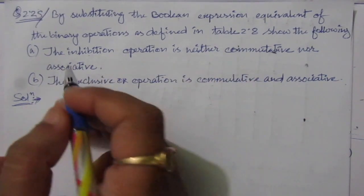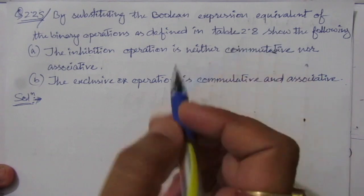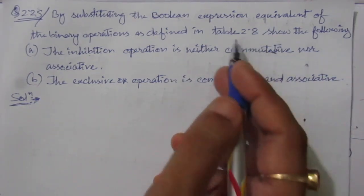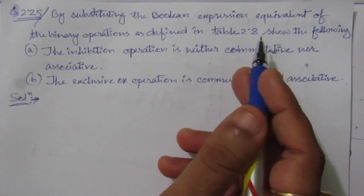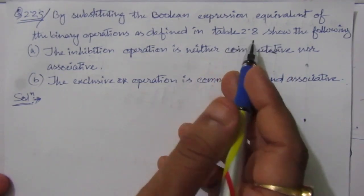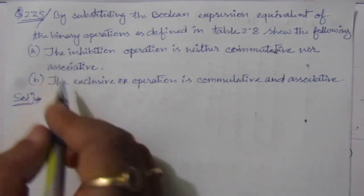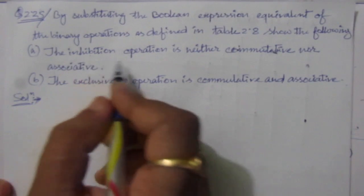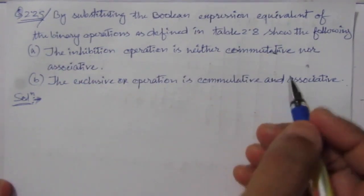The problem is: by substituting the Boolean expression equivalent of the binary operations as defined in table 2.8 — this table 2.8 is from chapter 2, you will find it inside the chapter — then show the following, that means we have to prove these two points. The first problem is that the inhibition operation is neither commutative nor associative.